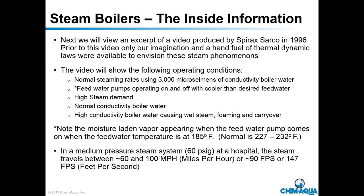In a medium-pressure steam system — about 60 PSI in a hospital — steam travels between 60 and 100 miles per hour depending on pipe diameter, equivalent to 90 to 147 feet per second. What you're about to see is the inside of a boiler. The camera is located from the top left-hand side, looking down into what's called the steam chamber — this is where water levels, water bubbles, and probes are located.